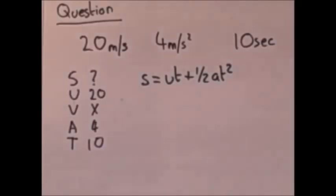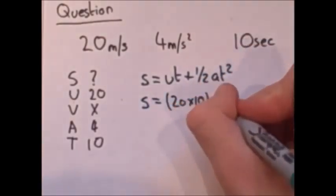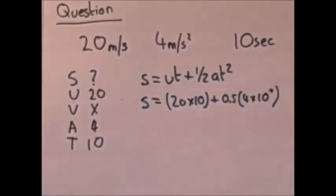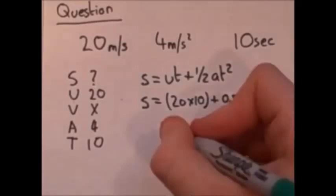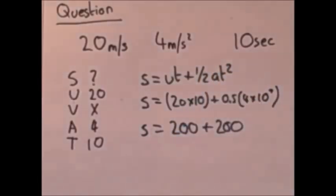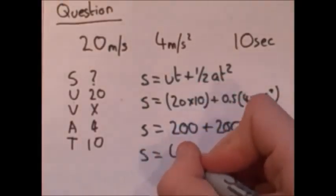So let's put the numbers in and see what we get. S equals 20 times 10, plus 0.5 times 4 times 10 squared, which is S equals 200 plus 200, so S equals 400 meters.